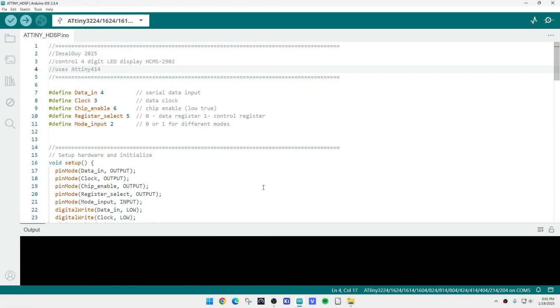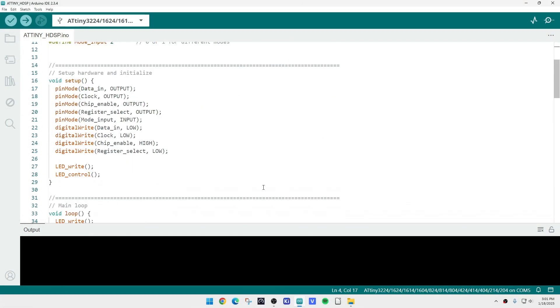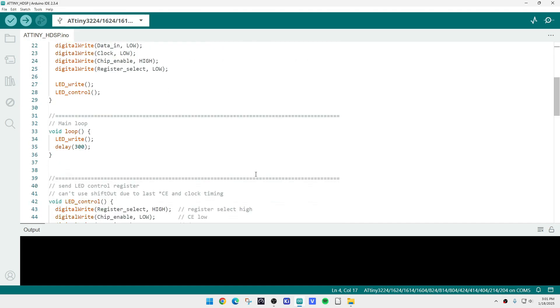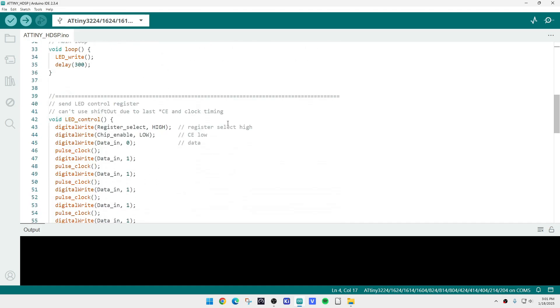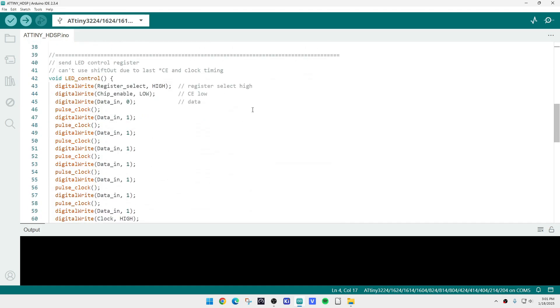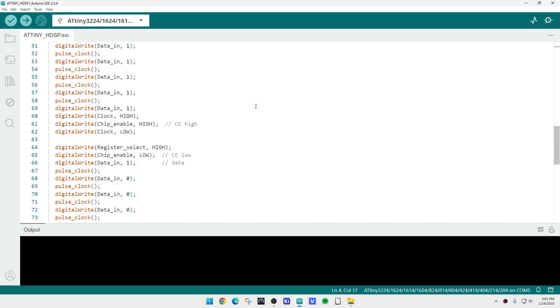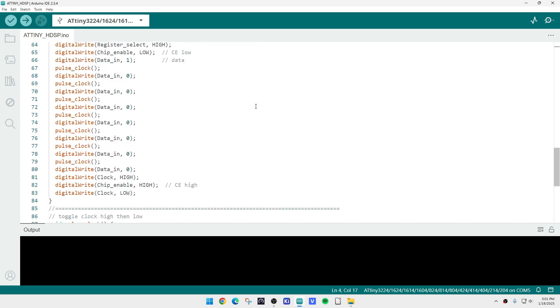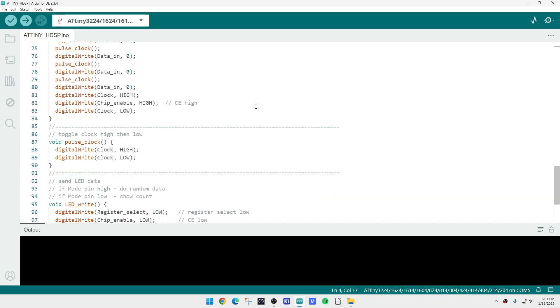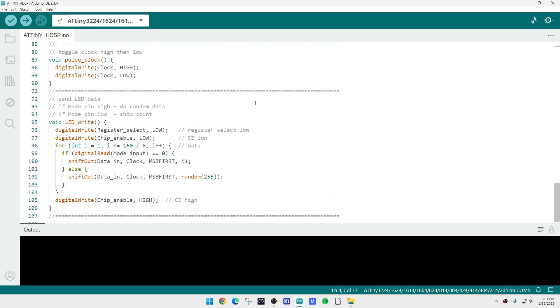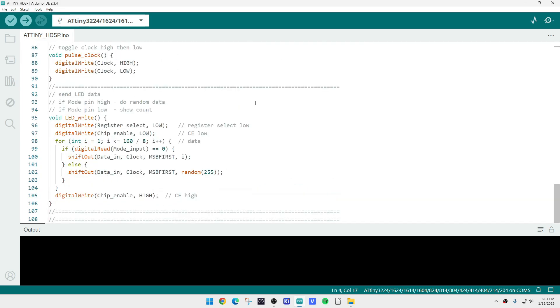And I'll just show you a quick look at the software and it's just writing a bit to the part. You need to write data 160 bits into the part and then you need to write two 8-bit words of control language. It's all spelled on the data sheet, but yeah.